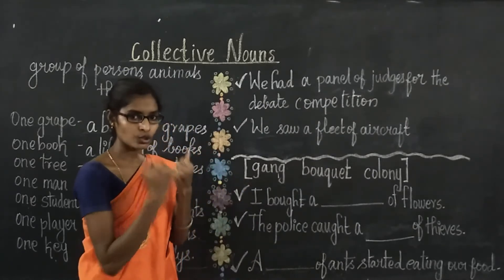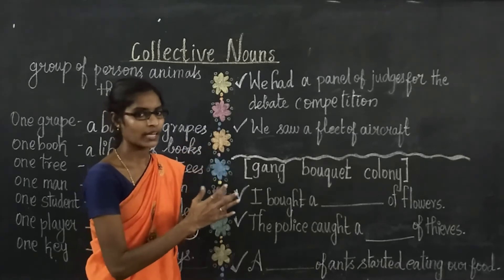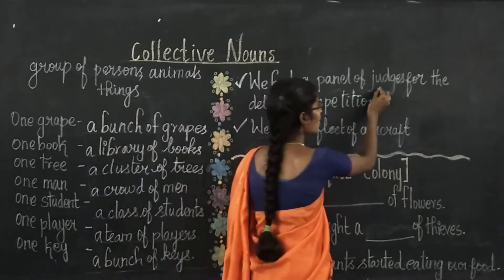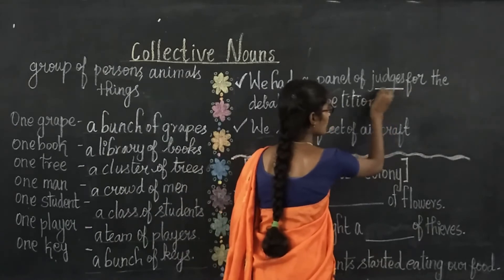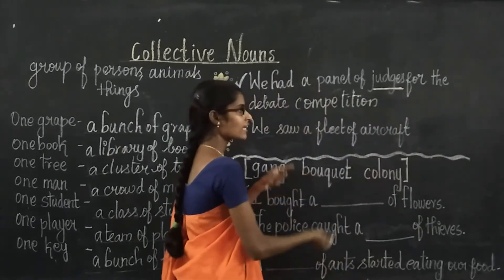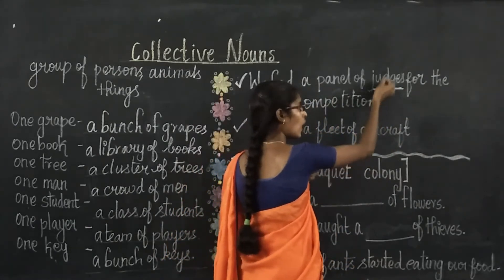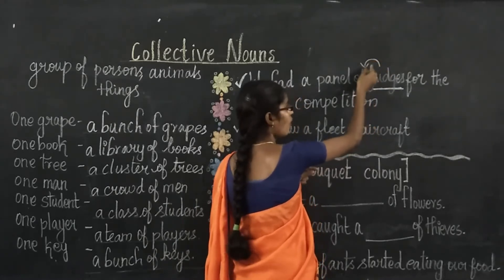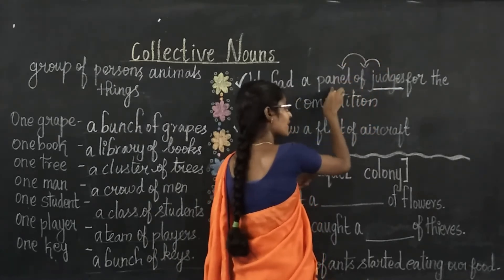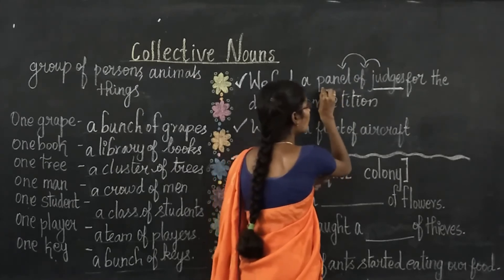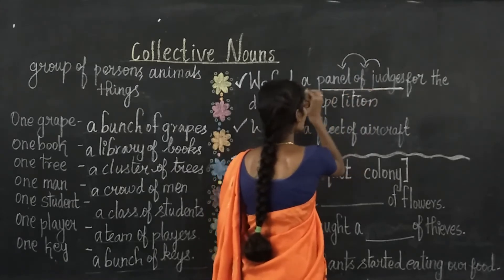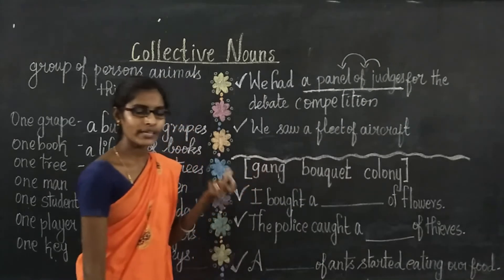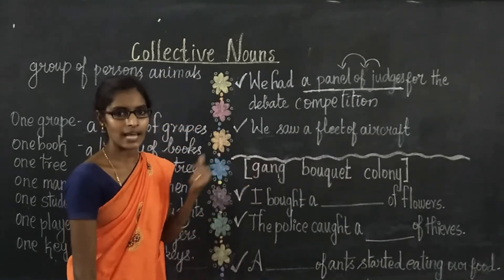In this sentence, we are going to identify the collective noun. A noun is a naming word — here the naming word is 'judges.' Before the noun, look for 'of,' and before 'of' you have the group name: 'panel.' So 'a panel of judges' is the collective noun in this sentence.